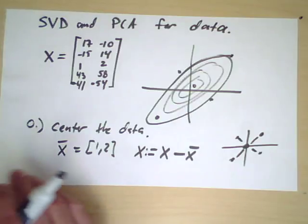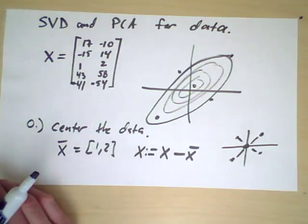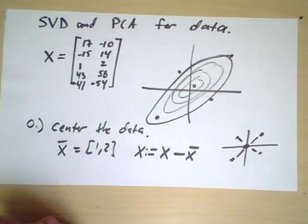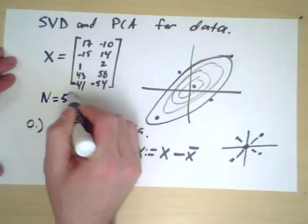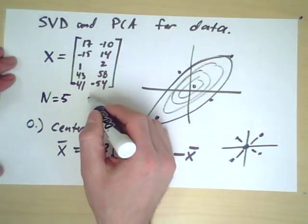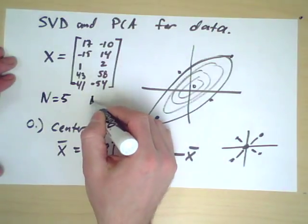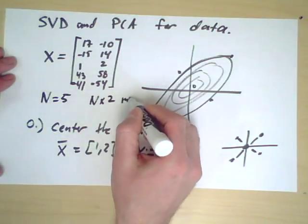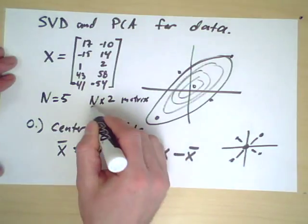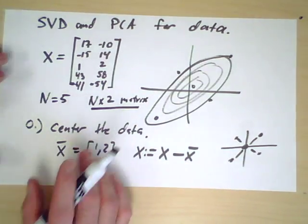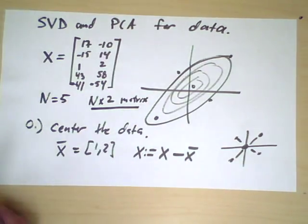The next step is to produce what's called the covariance matrix. To do this we have to keep track of the number of points. In this case n is equal to 5, so x is an n-by-2 matrix.